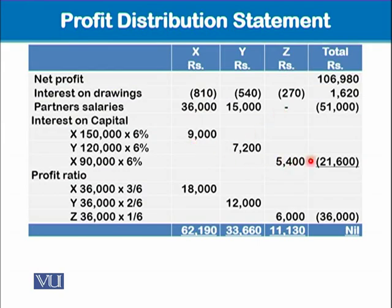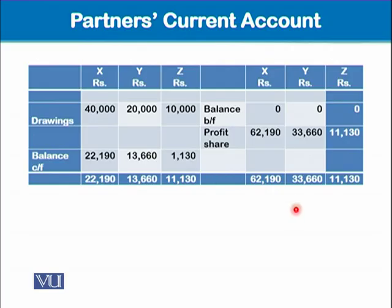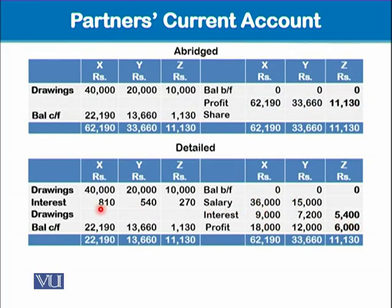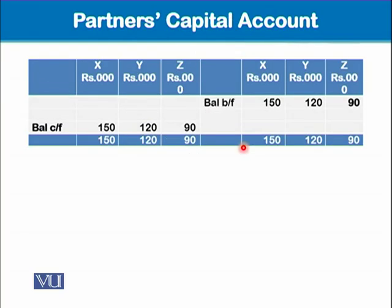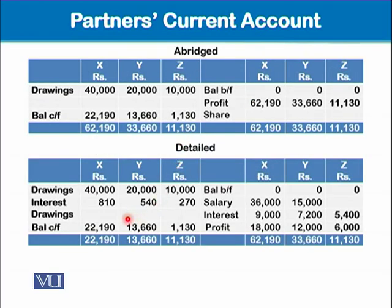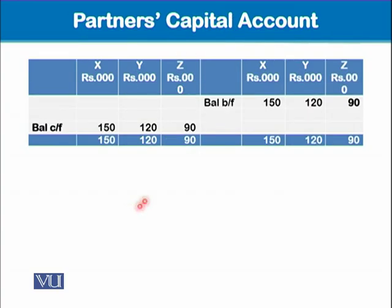All information — partner salary, interest on capital, and profit sharing ratio based figures — is picked up from the profit distribution statement and placed on the credit side of the current account. Interest on drawings along with drawings goes on the debit side, and the balancing figure remains the same. For the partners' capital account, it shows the capital balances contributed: 150,000, 120,000, and 90,000. Remember, drawings are debited in the current account, not in the capital account.